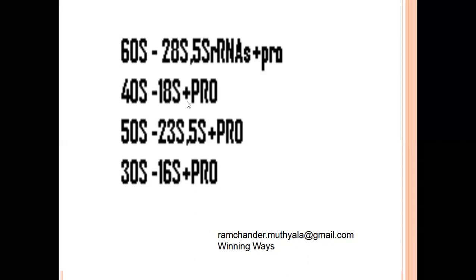The small subunit of the eukaryotic ribosomal complex, 40S, is built by 18S rRNA and protein particles. The 60S large subunit contains two major sites: the aminoacyl site (A-site) and the peptidyl site (P-site). The A-site is responsible for receiving amino acids, and the P-site mainly helps in the formation of peptide bonds between the two amino acids. These two subunits together form the 80S ribosomal complex in eukaryotes.